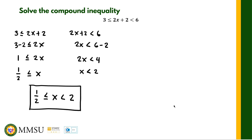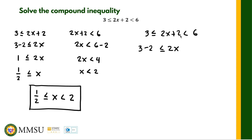For the second method, we leave the inequality as it is: 3 is less than or equal to 2x plus 2, which is less than 6. We subtract 2 from each of the three sides. So we have 3 minus 2, then 2x plus 2 minus 2 — the plus 2 is eliminated — and 6 minus 2, giving us 1 is less than or equal to 2x, which is less than 4.